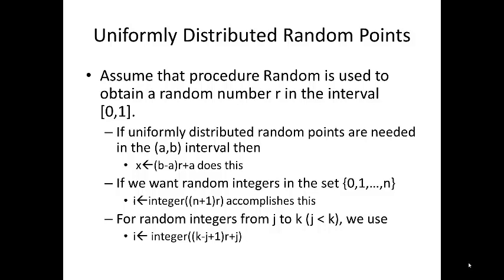We want random integers in the set 0, 1 through N. We basically take N plus 1 multiplied by R and cast that to an integer and map it into I. And for random numbers from J to K, with J being less than K, we take K minus J plus 1 multiplied by R, add J, and then convert that to an integer and assign it to I.